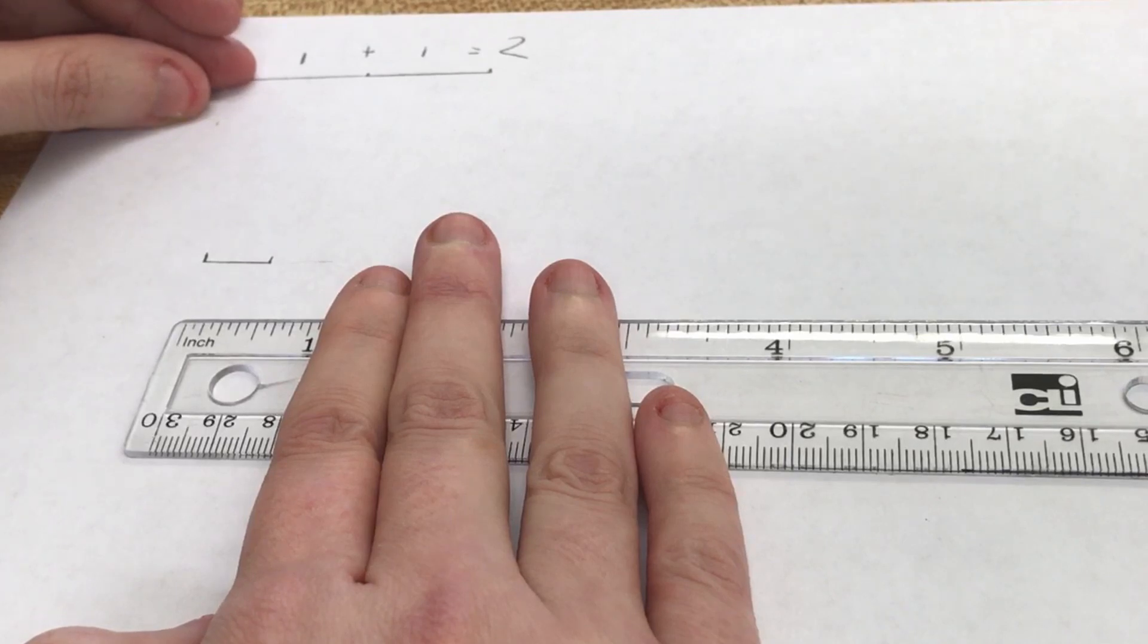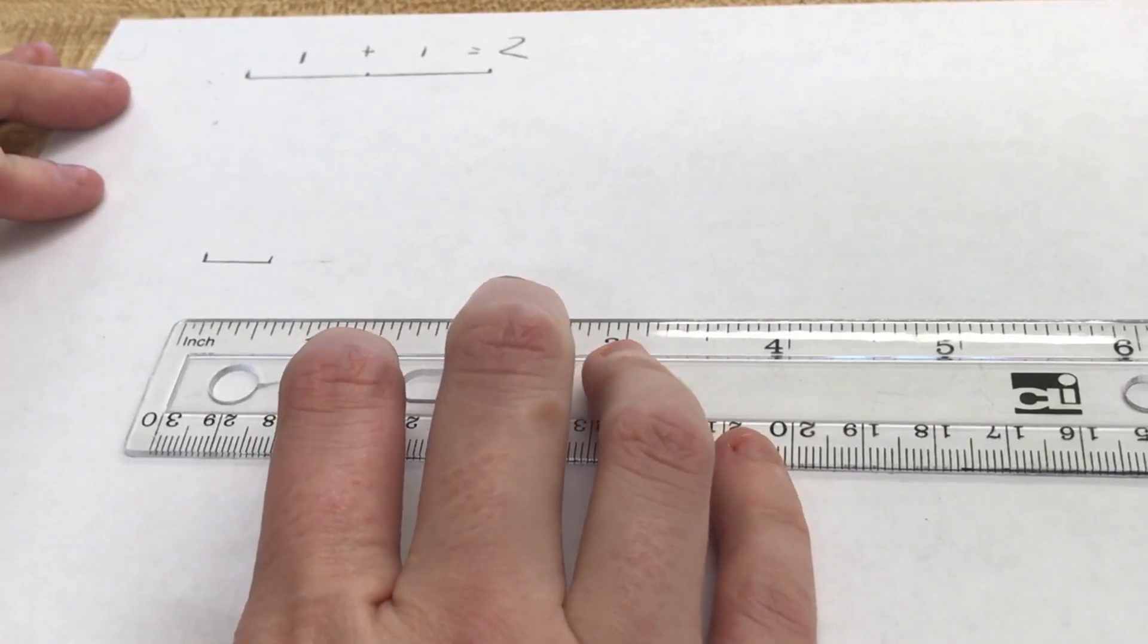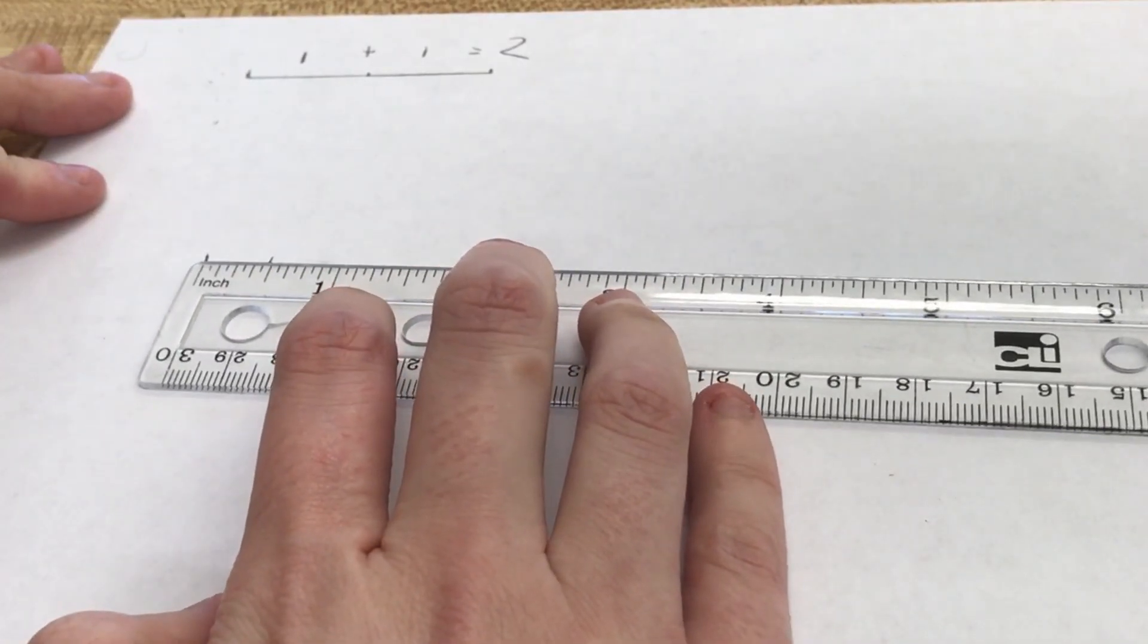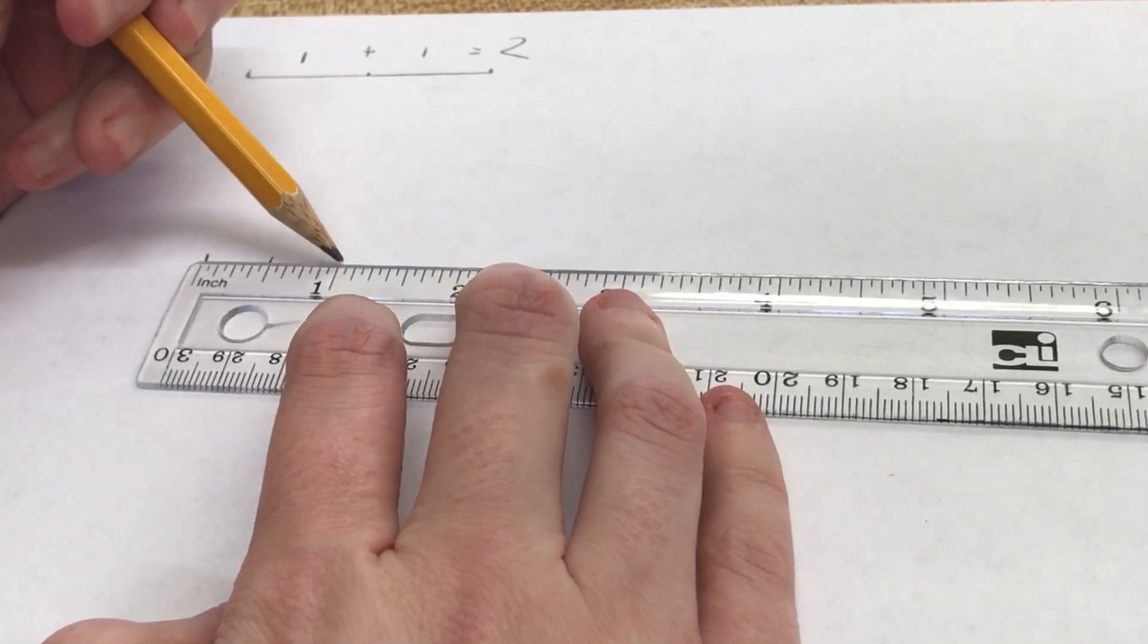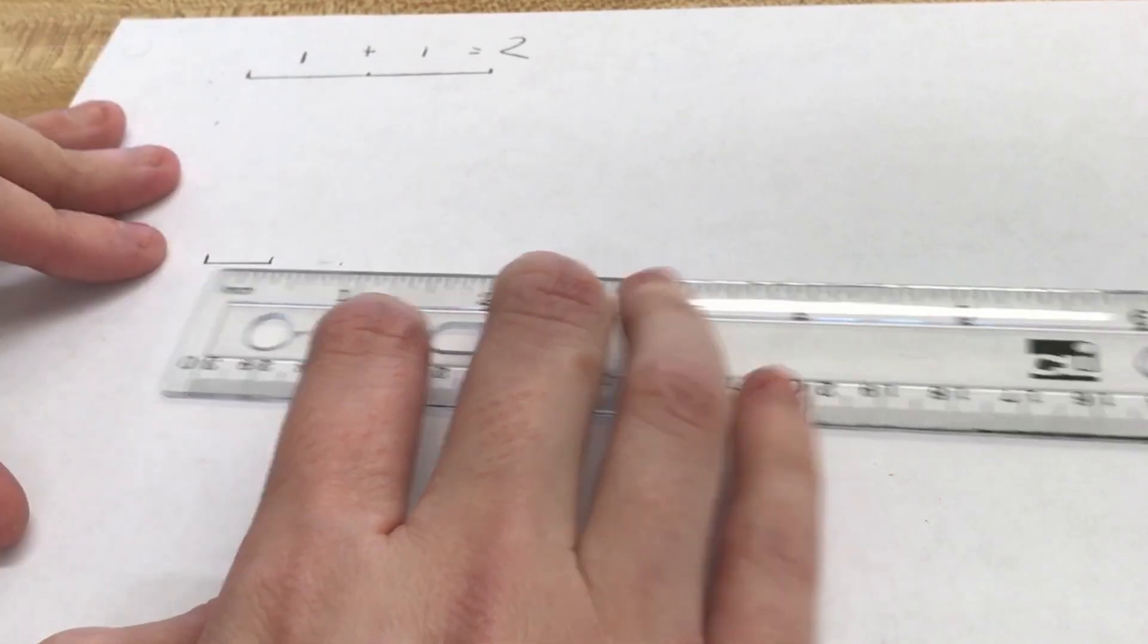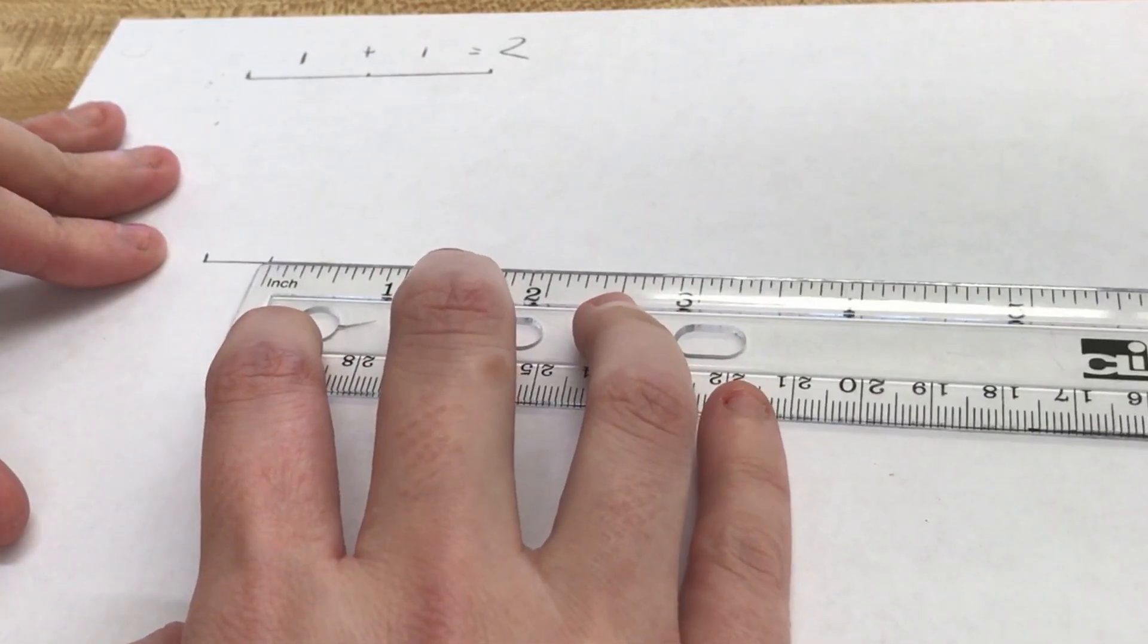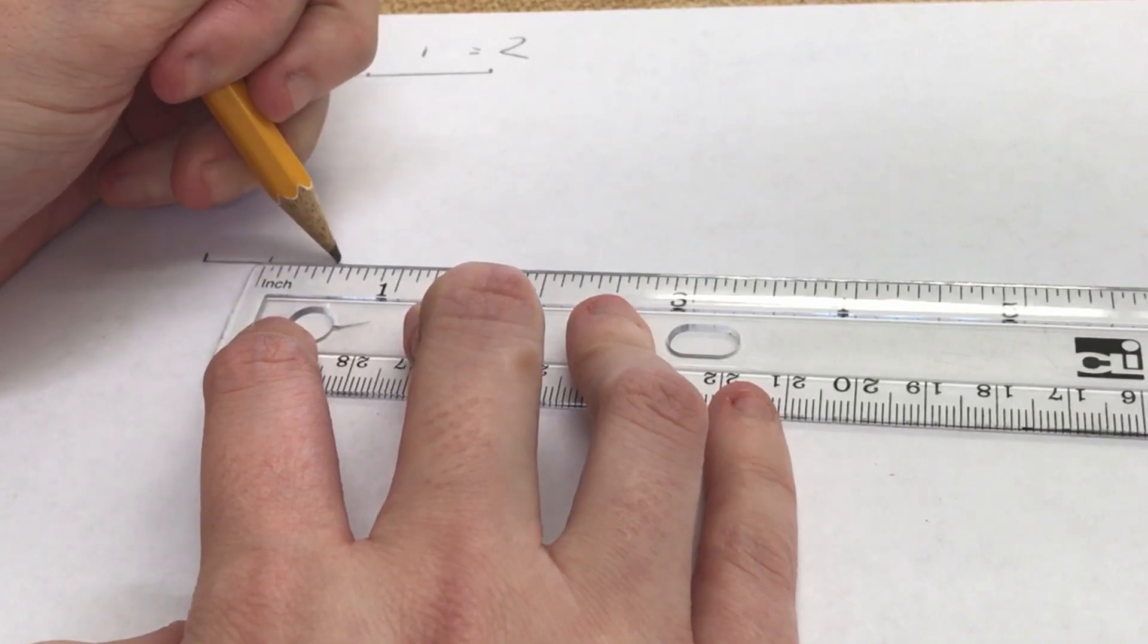Now, in order to make this a whole inch, I have two options. I can either line this back up and continue my line over to the one. That would make a whole inch. Or I could slide this over, start back at the zero line, and go back over to another half.